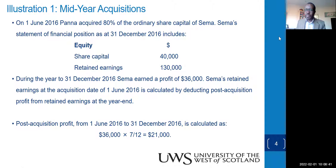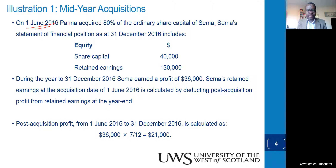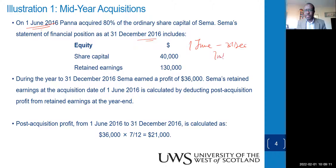First illustration: on 1st June they acquired 80% of the ordinary shares of Sima. Sima's statement of financial position at 31st December 2016 includes these figures. From 1st June to 31st December is seven months out of twelve. During the year to 31st December, Sima earned a profit of 36,000 for the whole year, January to December.